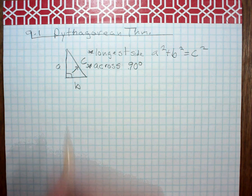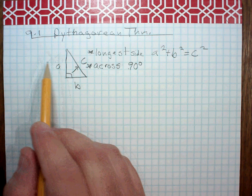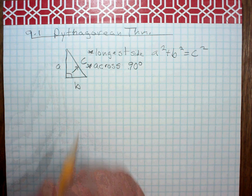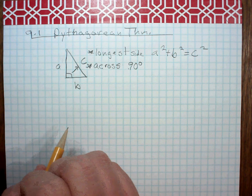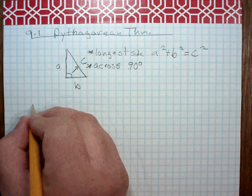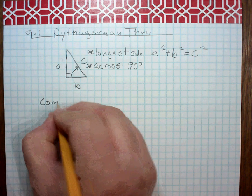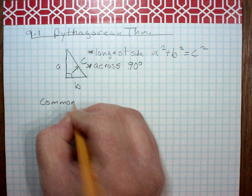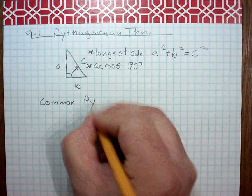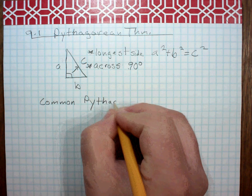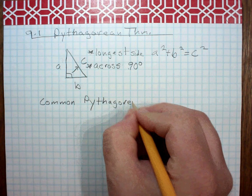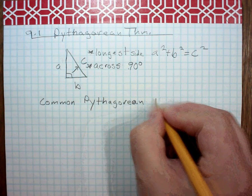Okay, and then A and B are kind of somewhat arbitrary. We'll talk more about that when we talk about the angles. So there is another thing I want you guys to think about, and these are what we call the common Pythagorean triplets.